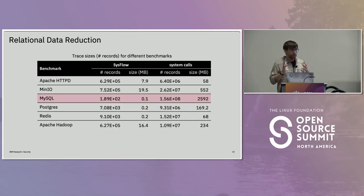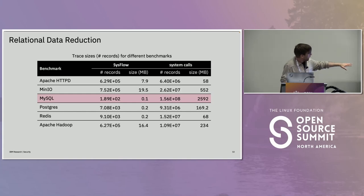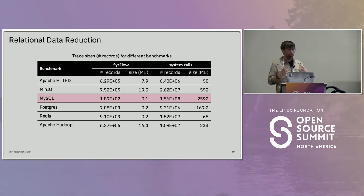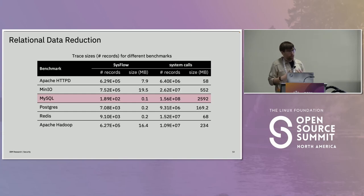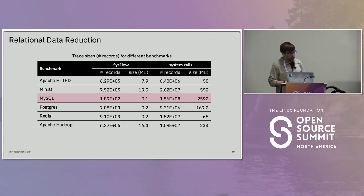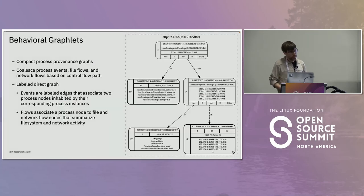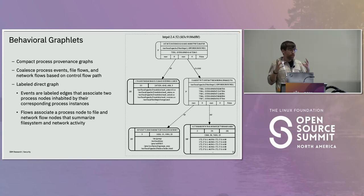Just to give an idea of the data reduction we can get from SysFlow versus raw system calls: in many cases we get over an order of magnitude reduction. It really depends on the process — databases get really good compression, while web servers see less reduction. But overall, we consistently get over an order of magnitude reduction.